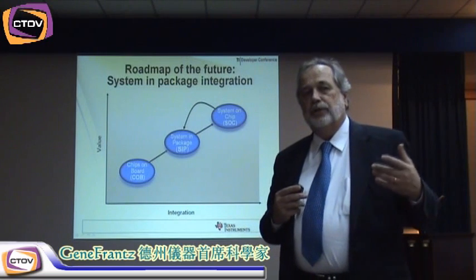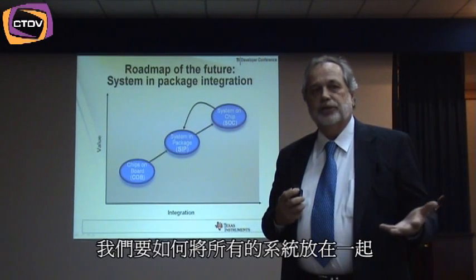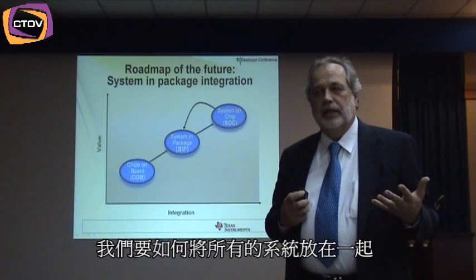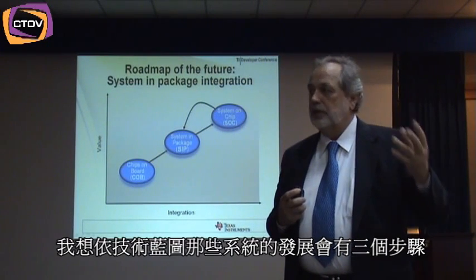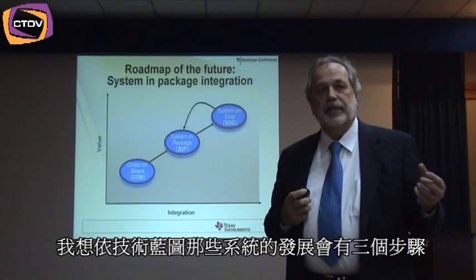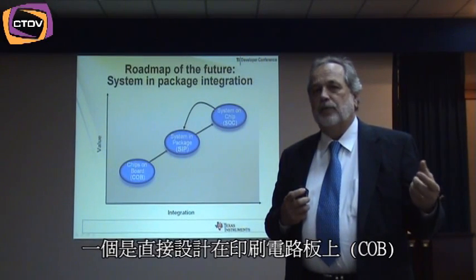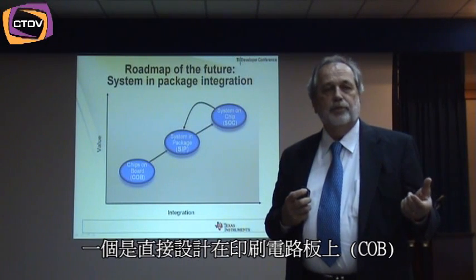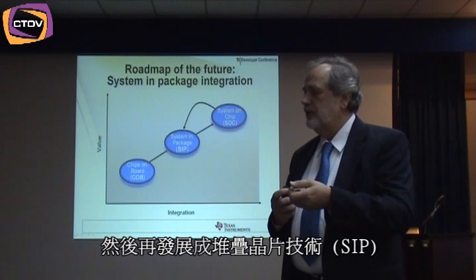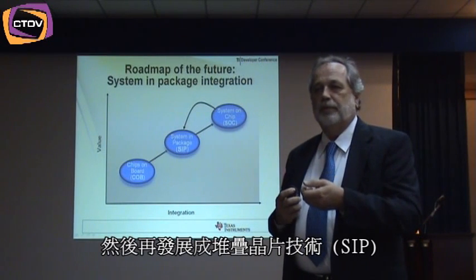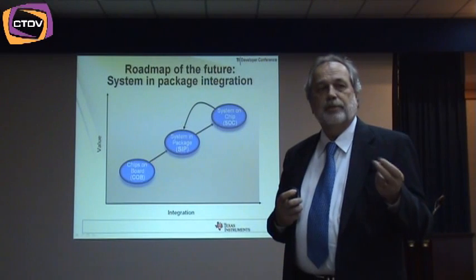The third thing is, as we go down the path, how are systems going to be put together? I argue that systems will have three bullets on the road map. One will be: I design it onto a printed circuit board. Then, once I have a printed circuit board, I should be able to stack devices or put them all in one package — system in package. And then the final step will be system on a chip.